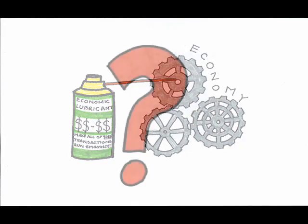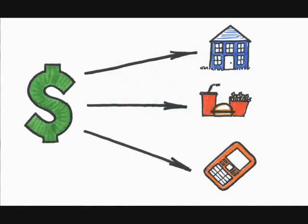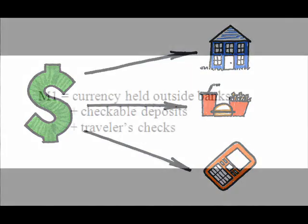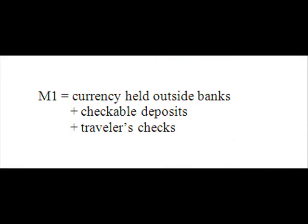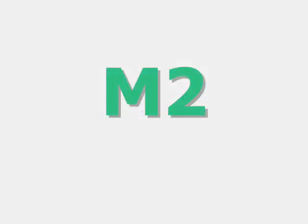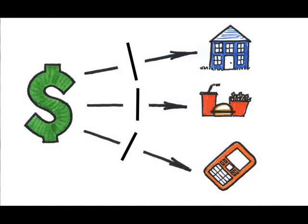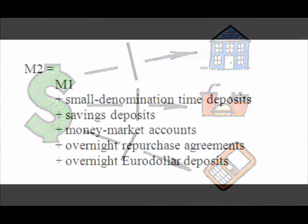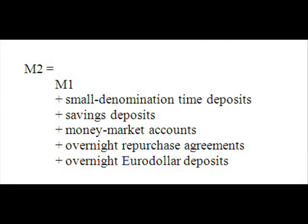Now that we know something about money, what is the definition of the money supply — i.e., what's included in the money supply? There are actually multiple official versions. Let's start with the narrowest definition, M1. M1 includes the components of money that are most easily and immediately converted to goods and services, or the most liquid assets: currency held outside banks, checkable deposits, and traveler's checks. The M2 money supply is actually the most common definition. It includes everything in M1 plus assets that are slightly more difficult to convert to goods and services, like small denomination time deposits — that is, CDs where you'll pay a penalty for cashing in early — or savings deposits, money market accounts, etc.